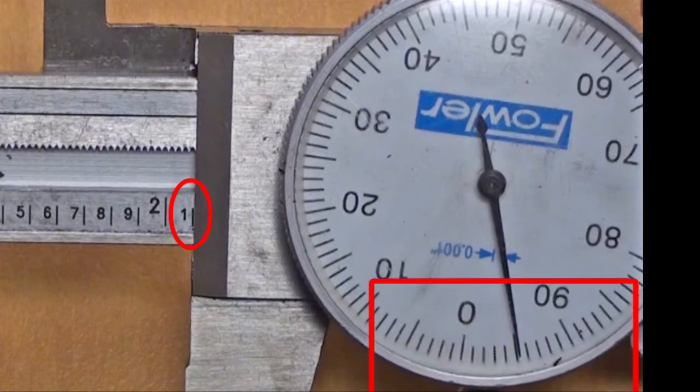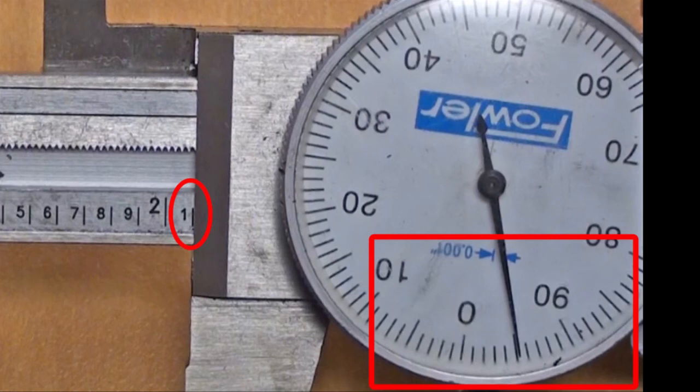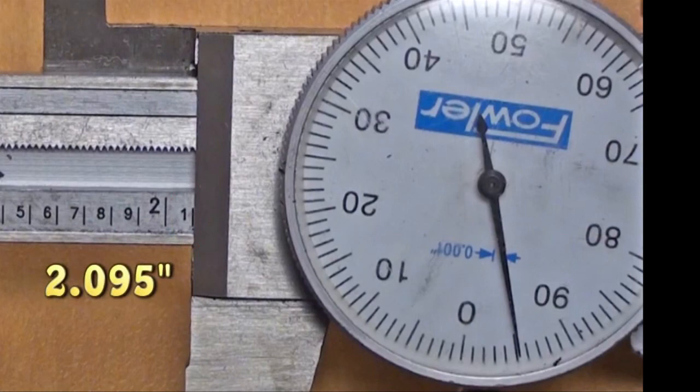Don't be fooled. Look at the dial. It reads 95 thousandths of an inch. This measurement is just 5 thousandths of an inch shy of the 100 thousandths line. Therefore, this measured value is 2 inches and 95 thousandths of an inch.